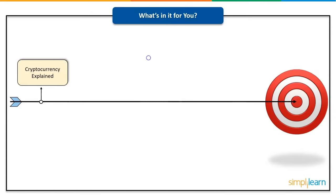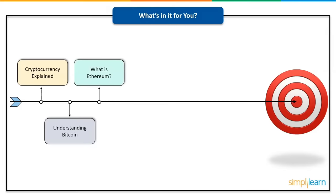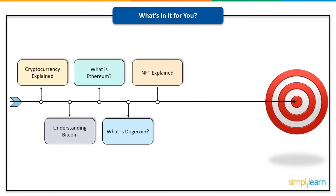We'll start by discussing facts and components about Bitcoin, followed by how to mine Bitcoin, after which we will understand what Ethereum is and explore its upgrade as well as how to mine Ethereum. After that we will compare Bitcoin and Ethereum, then explore our third crypto Dogecoin and its various components like Dogecoin mining, Dogecoin wallet, and its comparison with other cryptocurrencies. Then we'll jump into other popular aspects of cryptocurrencies.